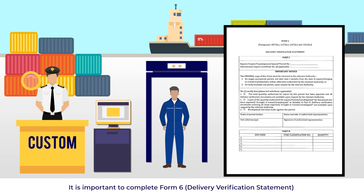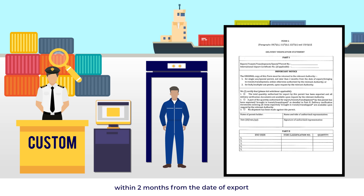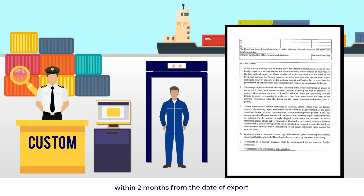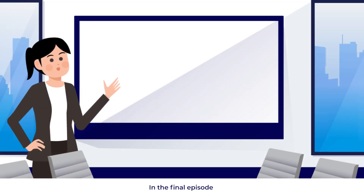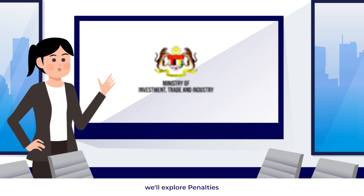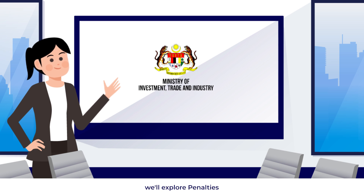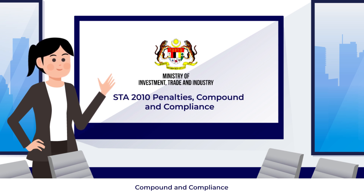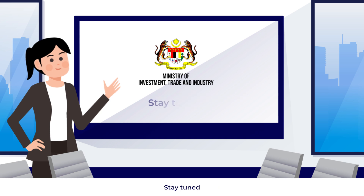The exporter shall indicate the issuance of the STA permit in the customs declaration form. It is important to complete Form 6, the Delivery Verification Statement, within two months from the date of export. In the final episode, we'll explore penalties, compound, and compliance. Students, stay tuned.